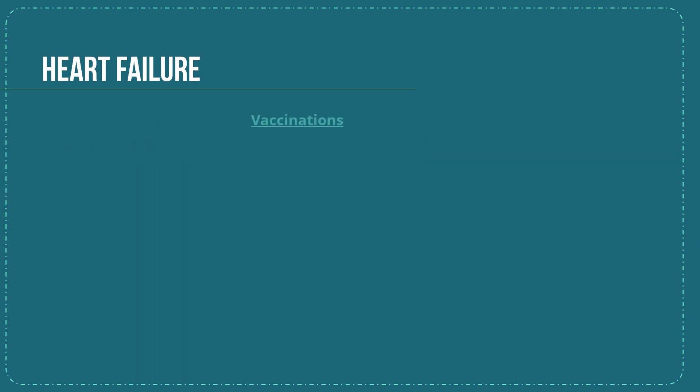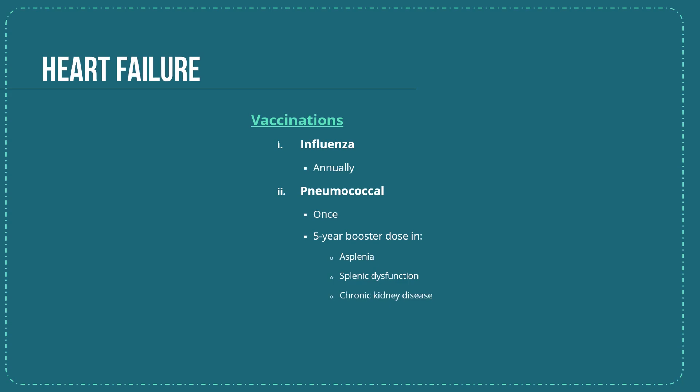Other supportive treatments include influenza and pneumococcal vaccinations. The influenza vaccine is given annually, while the pneumococcal vaccine is given once. A five-year booster of the pneumococcal vaccine is given to patients with asplenia, splenic dysfunction, or chronic kidney disease.